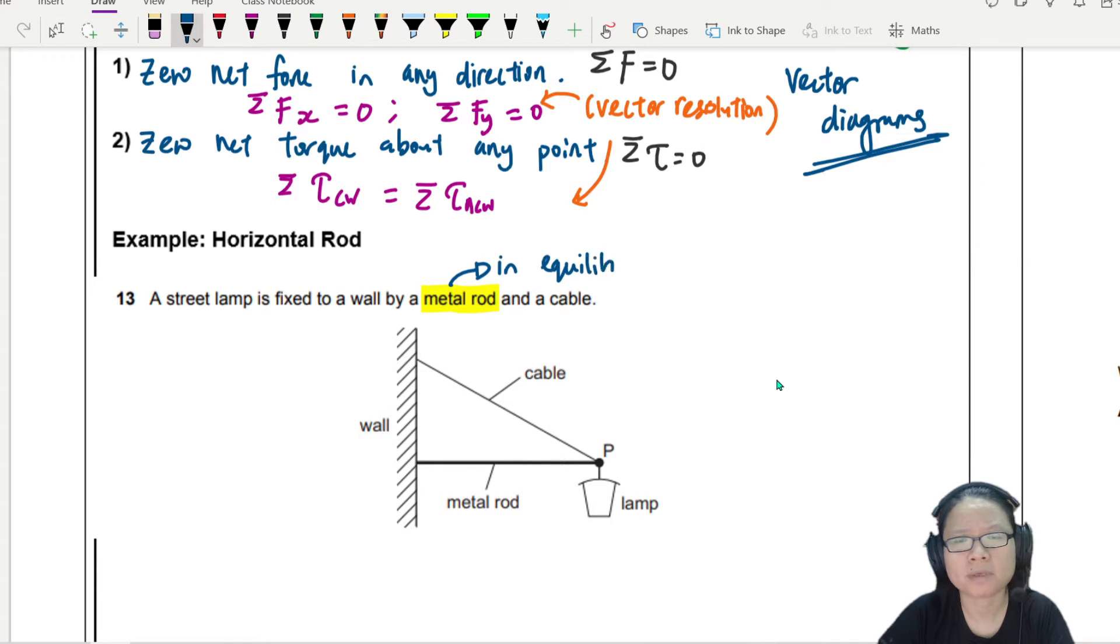So my metal rod is the system in equilibrium. Of course, you also may be thinking, Teacher, the lamp is also in equilibrium. Yeah, lamp is in equilibrium. But if I assume the center of gravity of the lamp is here and I draw out the forces acting on the lamp, I just have tension in the string that is holding up the lamp and I have mg. This is a very underwhelming vector diagram. It doesn't need resolution. It doesn't need a vector diagram. So we don't talk about the lamp because we know what's going on with the lamp. But I want to focus on the metal rod because the metal rod actually has several forces acting on it.